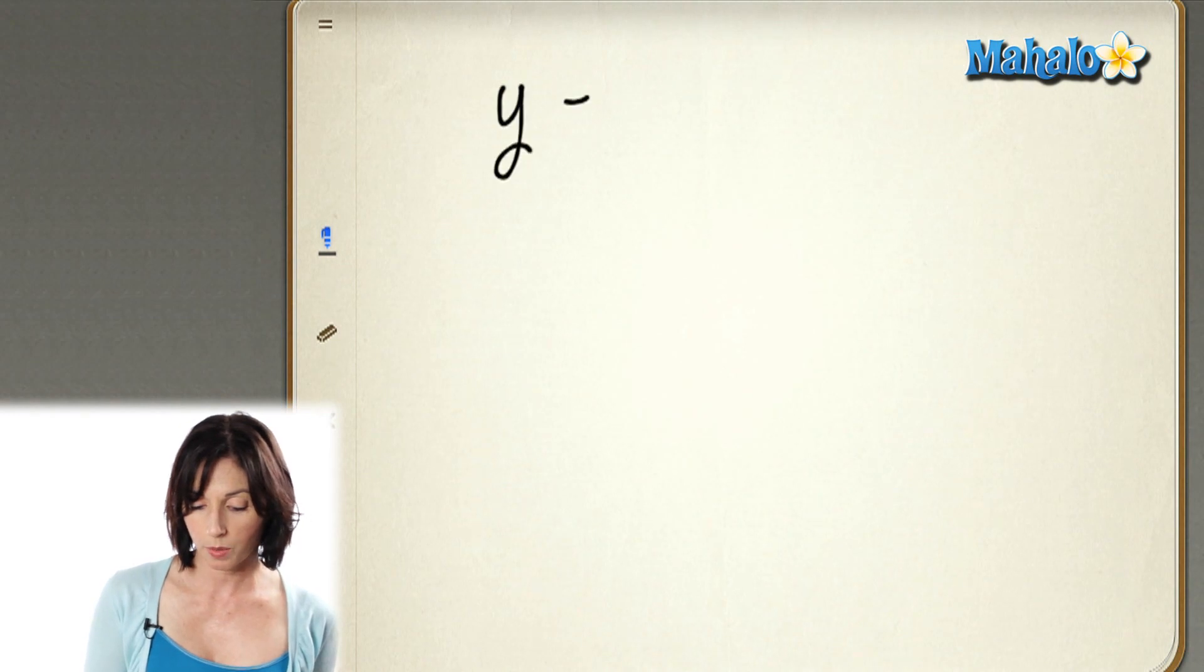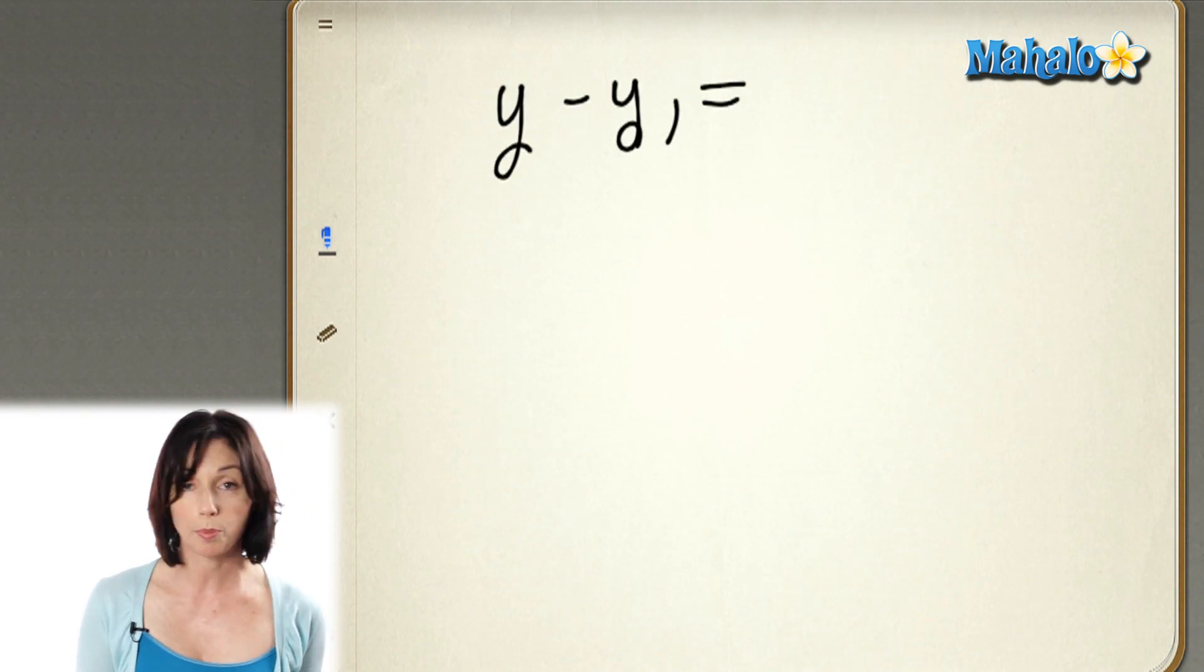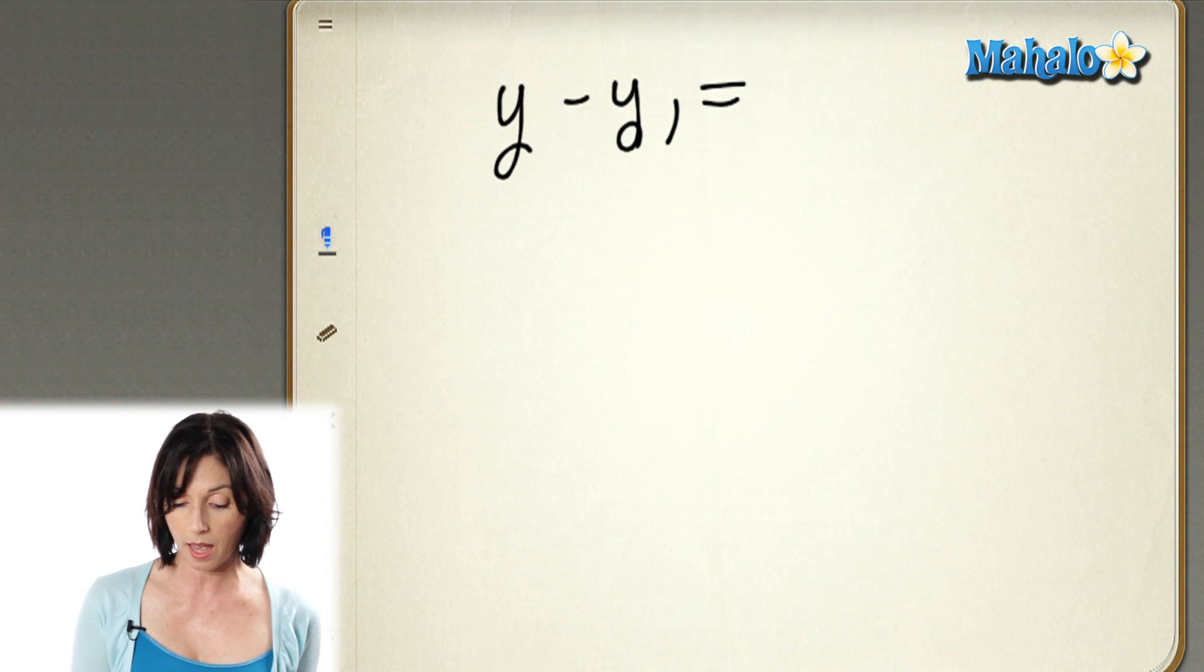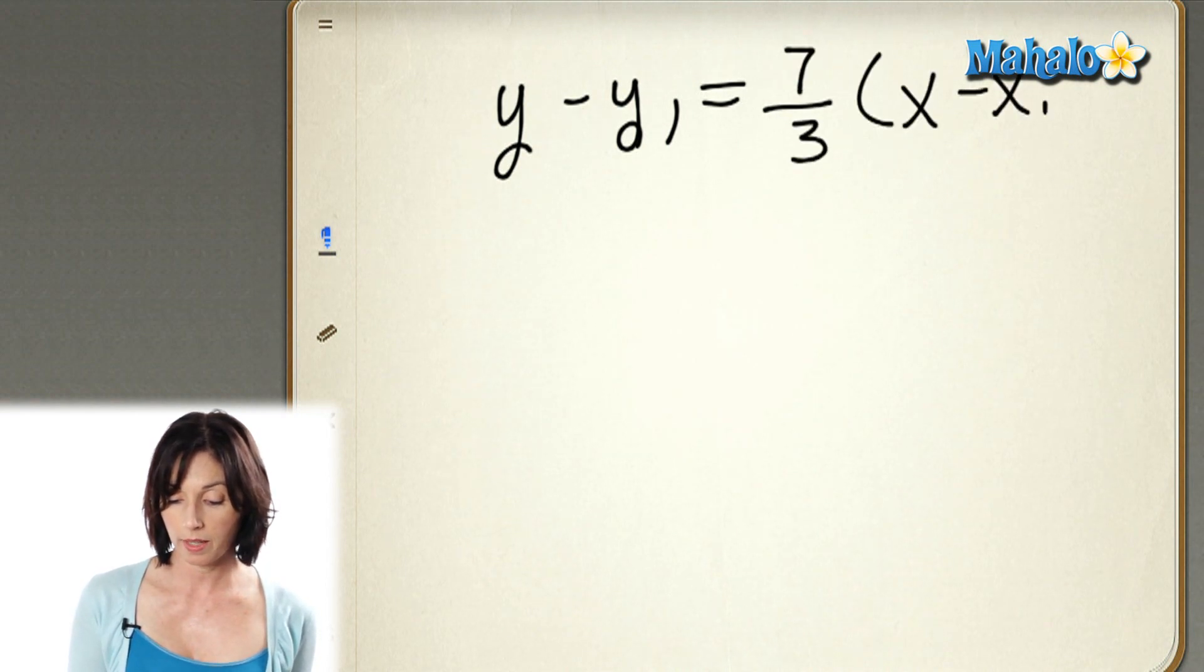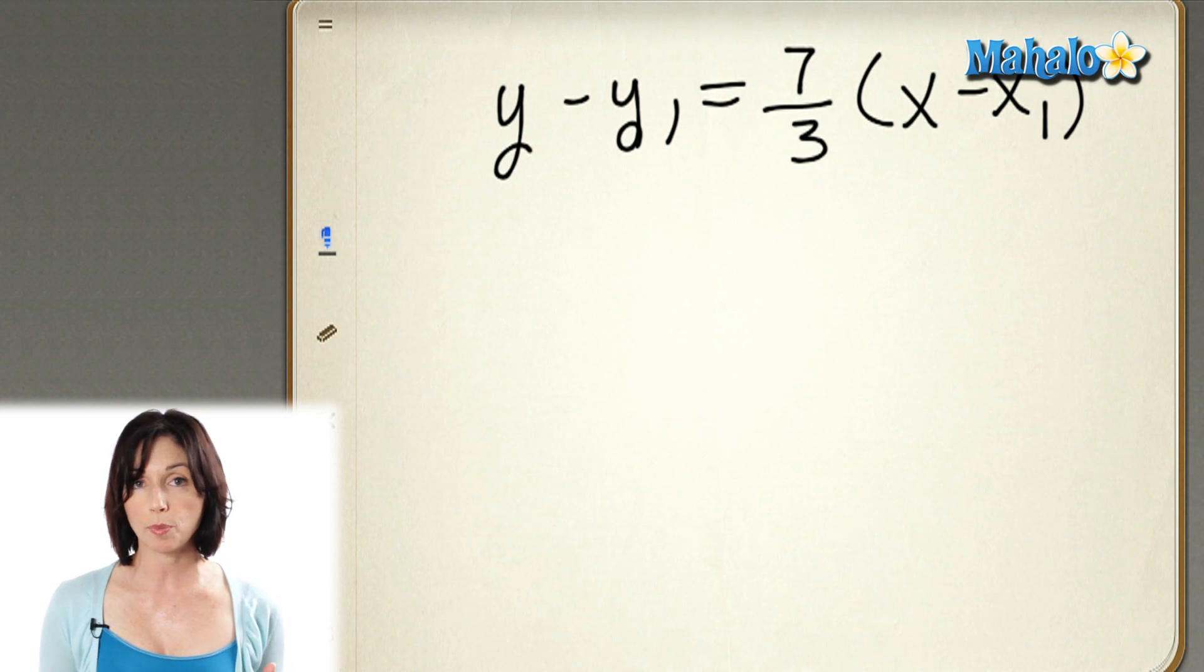We have y minus y1 equals, I'm going to put the slope in. Instead of writing m, my slope is 7 thirds. x minus x1. Now, all I have to do is plug a specific value in for x1 and a specific value in for y1, and I'm done.